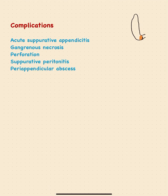Complications of appendicitis include acute suppurative appendicitis, where the entire appendix is filled with pus. Due to vascular compromise, gangrenous necrosis of the whole appendix can occur. Necrosis and thinning of the appendix wall can lead to perforation and subsequent suppurative peritonitis. Lastly, pus can collect around the appendix, causing a peri-appendicular abscess.